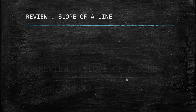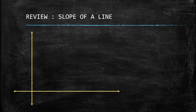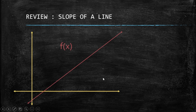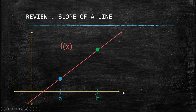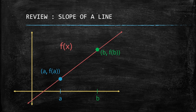As a review for the slope of a line, let's have an illustration. Suppose we have a Cartesian plane with the x-axis and y-axis, and suppose we have a linear function f of x. If we have two points within the line, the blue point has 'a' for its x-value, giving us the ordered pair (a, f(a)), and the green point has 'b' for its x-value, giving us the ordered pair (b, f(b)).